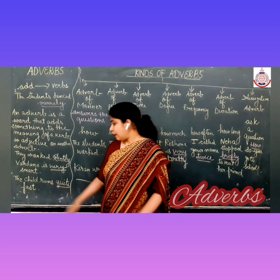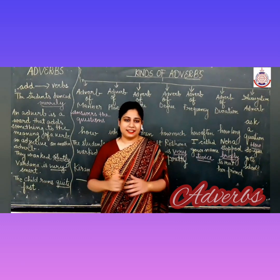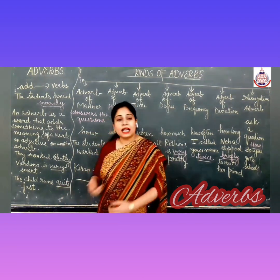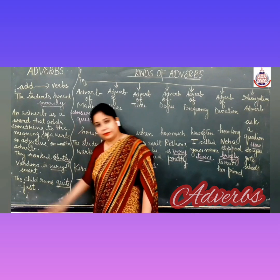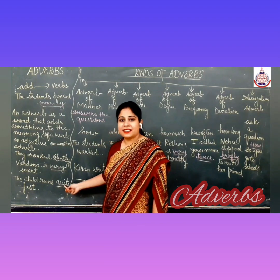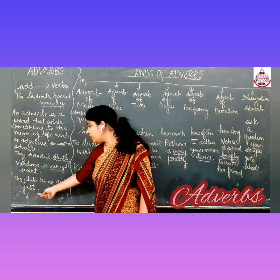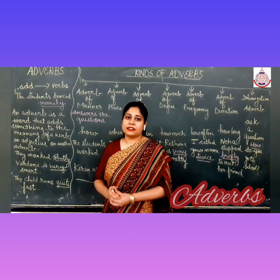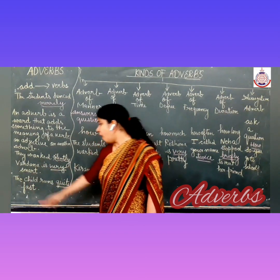Now let us see the third example. The child runs quite fast. How does the child run? Fast. Now 'runs' is a verb, and the word answering the question 'how' is fast — that is the adverb. But there is one more word here: quite. The child runs quite fast — quite is also an adverb, modifying the adverb 'fast'. So through these three examples we learn that adverbs add to the meaning of a verb, an adjective, or another adverb.